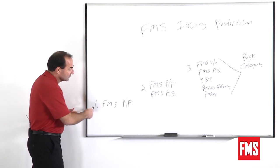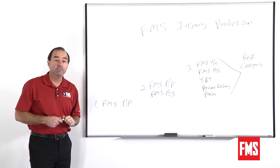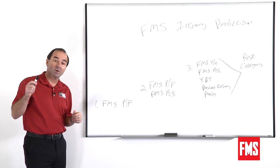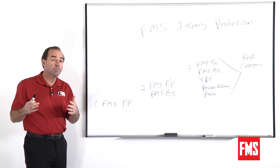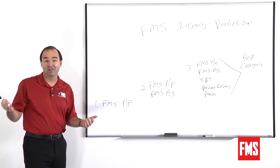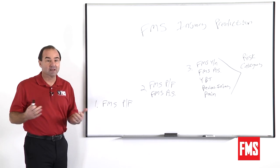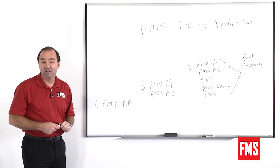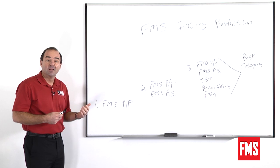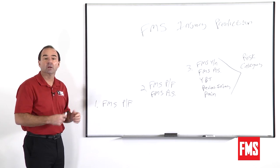The very first study we did was a small sample in professional football, and we just found a cut score on the FMS that separated those that got injured and didn't get injured. That injury definition wasn't ideal — it wasn't the best study — it was really just simply pilot data for us to say there's enough here in the FMS to keep looking.